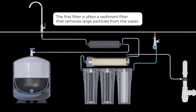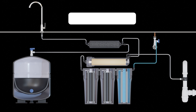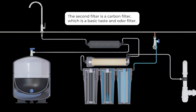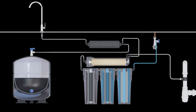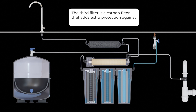The first filter is often a sediment filter that removes the large particles from the water. The second filter is a carbon filter, which is a basic taste and odor filter. The third filter is another carbon filter that may add extra protection against volatile organic compounds, or VOCs, and heavy metals like lead.